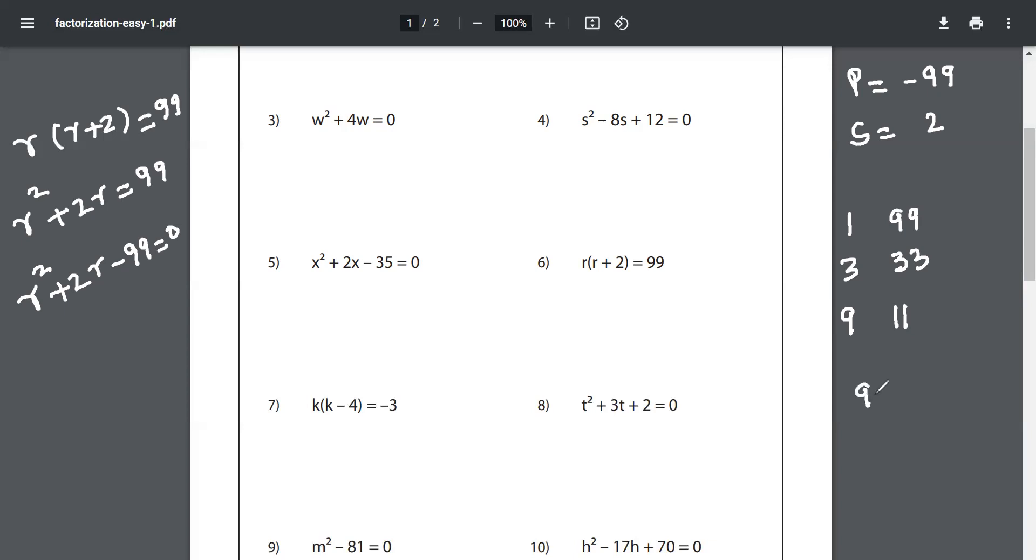But sir, the sum of 11 and 9 is, if I add, I will get 20. That doesn't make sense. But look at this: can I do -9 + 11? What do I get? I get 2. And when I multiply -9 with 11, what do I get? -99. So I have got my magic numbers: -9 and 11.